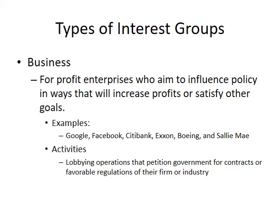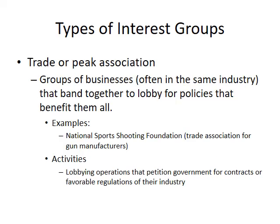Business interest groups are for-profit enterprises who aim to influence policy in ways that will increase profits or satisfy other goals. Examples include Google, Facebook, Citibank, Exxon, Boeing, and Sallie Mae — which trades student loans the way Freddie Mac and Fannie Mae trade house mortgages. Their activities include lobbying operations that petition government for contracts or favorable regulations of their firm or industry.